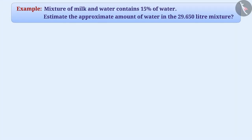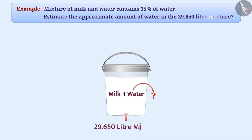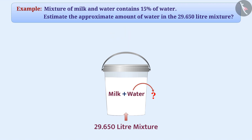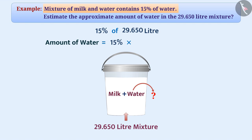Next example: A mixture of milk and water contains 15% of water. Estimate the approximate amount of water in the 29.650 litre mixture. By estimation we can solve this question in less time. In total 29.650 litre mixture, water will be 15% of 29.650 litres, that is 15% multiplied by 29.650 litre.